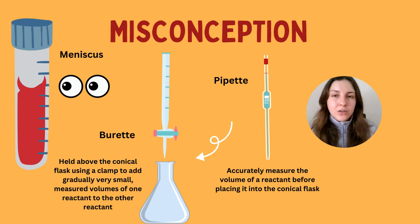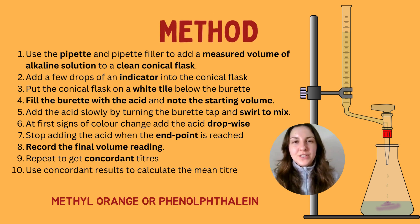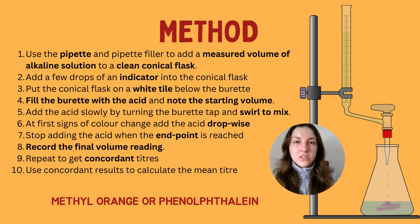Remember, the pipette solution is transferred into the conical flask, and when you add these solutions together you get the neutralisation reaction. This is the method you need to know at GCSE for titrations — you could get asked a six-mark question on it in the exam. This would require you to write a method in enough detail that someone else could conduct the experiment and obtain valid results.